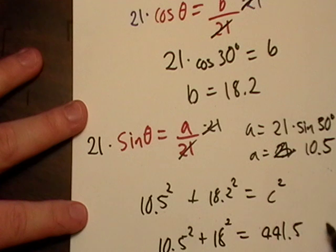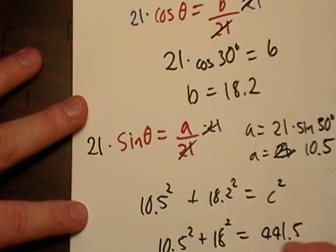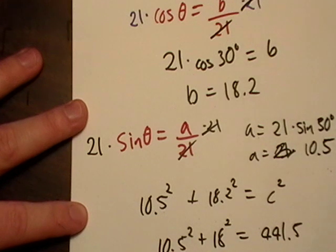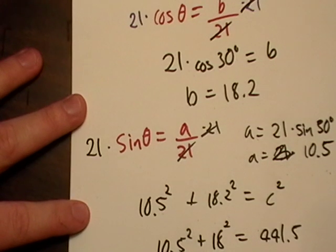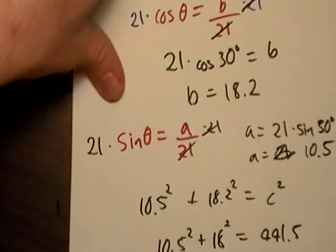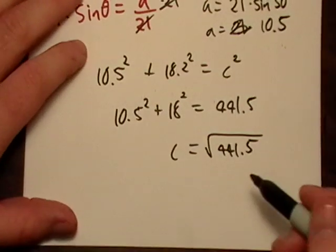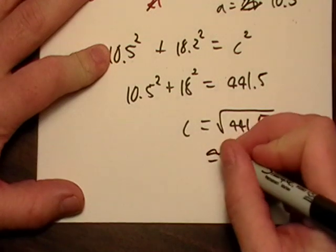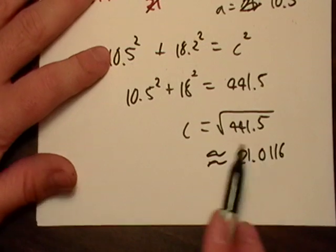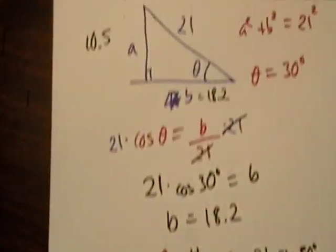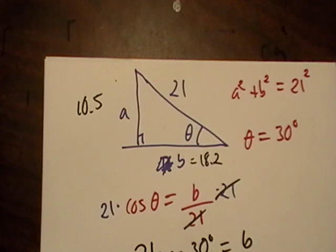10.5 squared plus 18 squared equals 441.5. I'm just going to estimate it. So, that's going to be A squared plus B squared. So, C is going to equal the square root of that. And, that comes out to be approximately 21.0116. I mean, I told you it was going to be a number like that because we didn't do exact calculations. But, there we go. That's basically trigonometry. And, that's what we're going to do. How about one more video of sine and cosine and all that stuff?